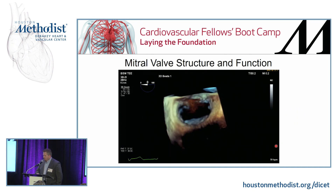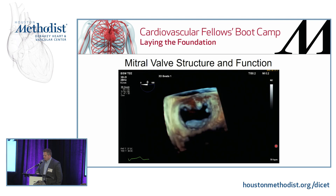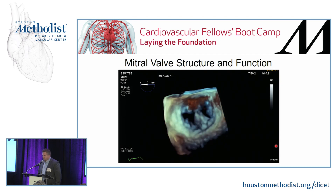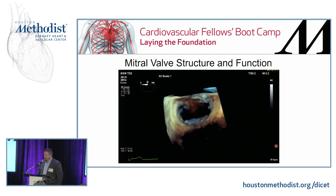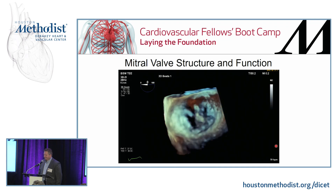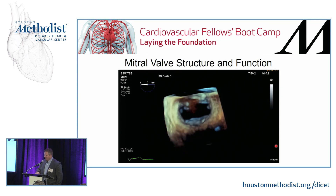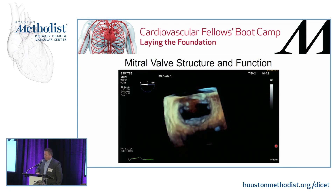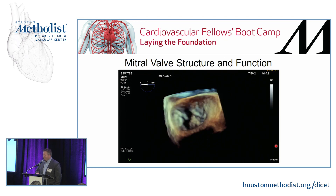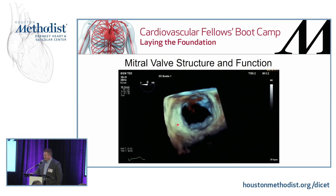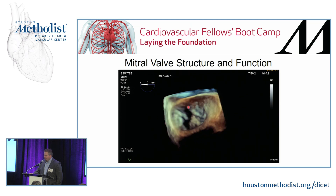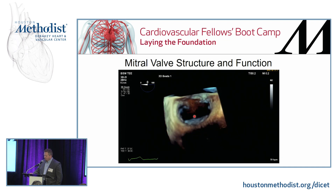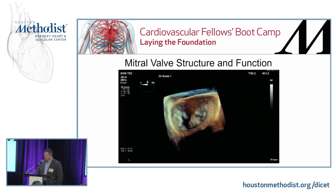Here's another 3D image — this is actually abnormal anatomy, specifically a flail P2 segment. We have the anterior leaflet with A1, A2, A3 up top, and corresponding P1, P2 — you can see this little knuckle of tissue flipping up into the image — and P3.